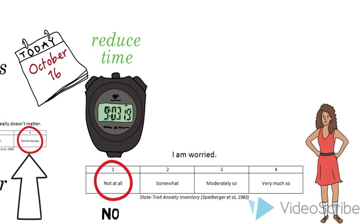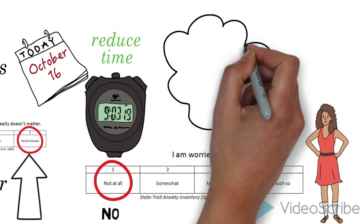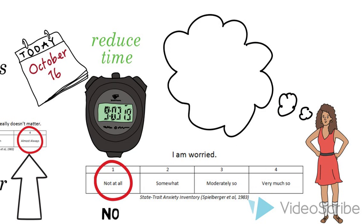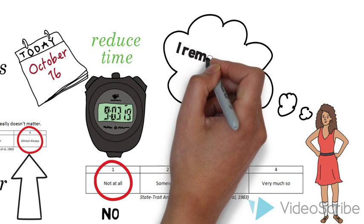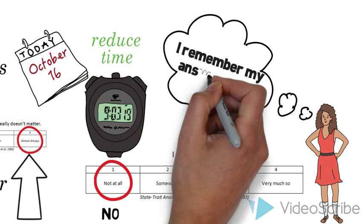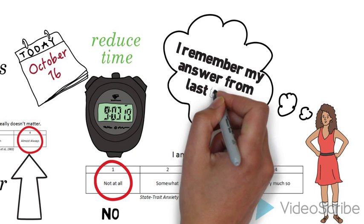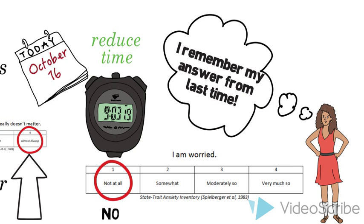But there's a problem with this as well. Can you see what it is? While you may want to minimize the chance that what you're measuring has changed, you also want to minimize the chance that a person simply remembers what they told you and gives you the same answer again. If this happens, you'll get a high correlation, but it won't be because the question is reliable.